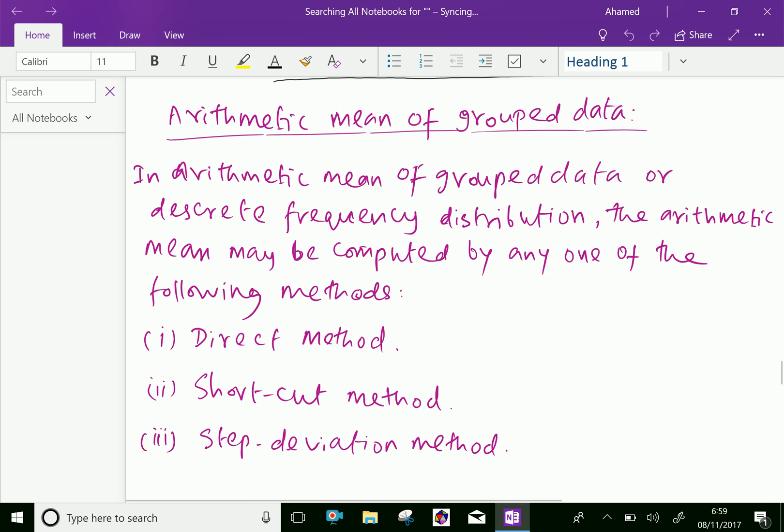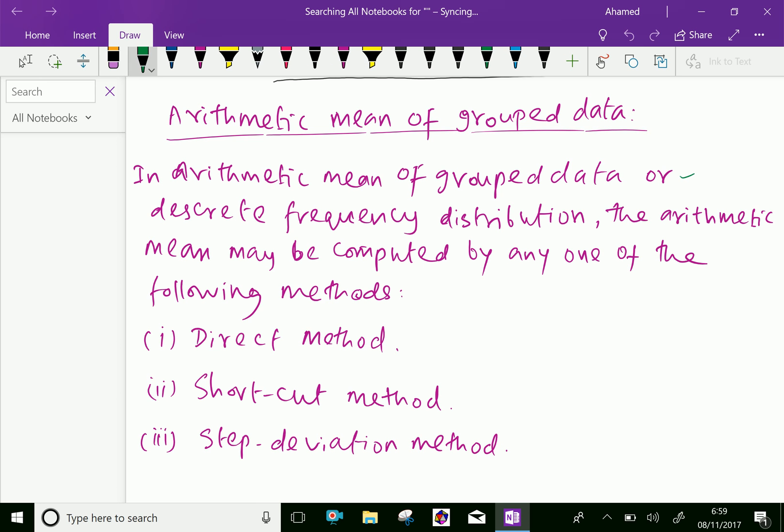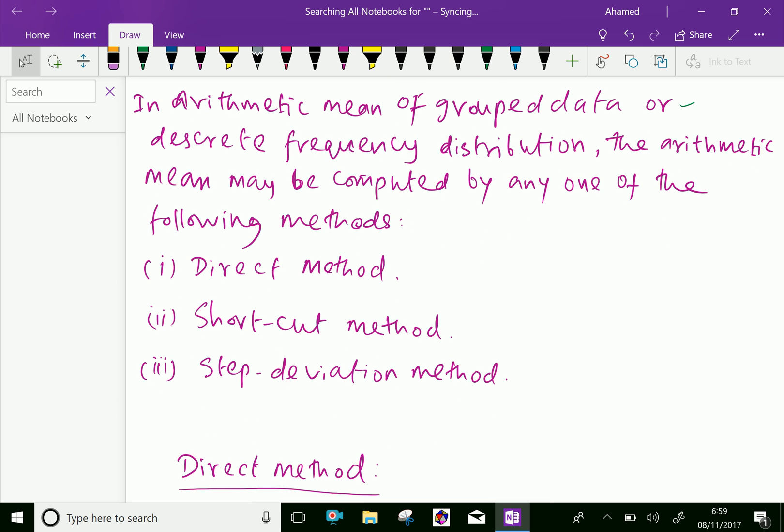In arithmetic mean of grouped data or discrete frequency distribution, the arithmetic mean may be computed by any one of the following methods: first one, direct method; second one, shortcut method; third one, step deviation method.